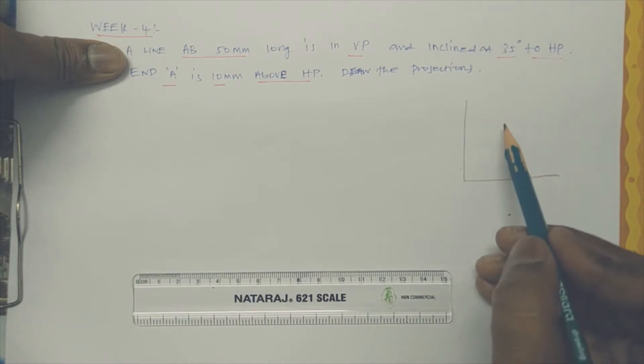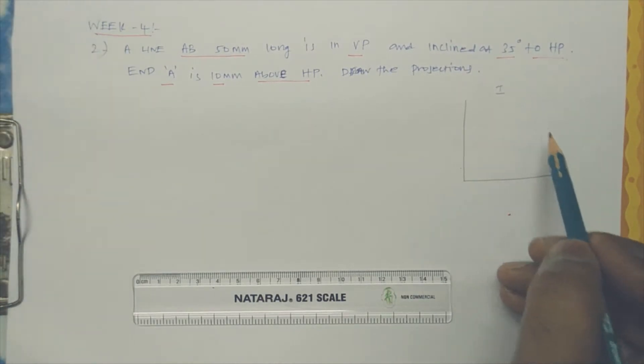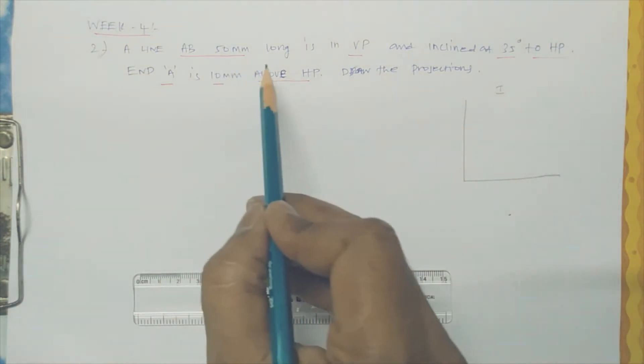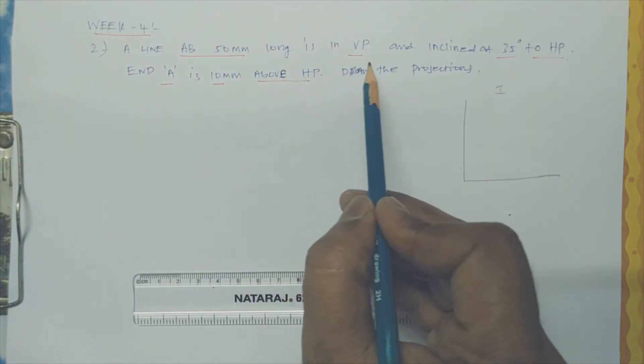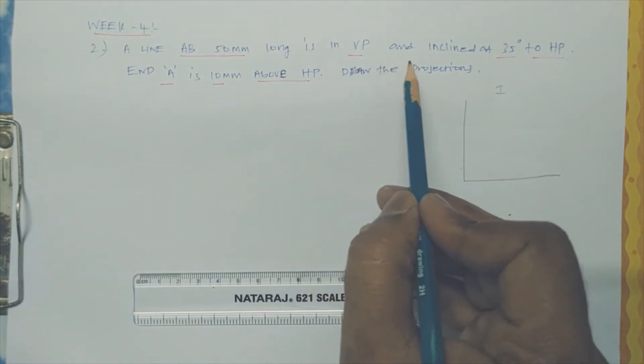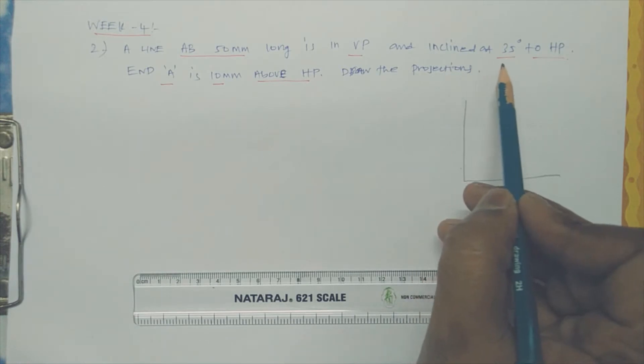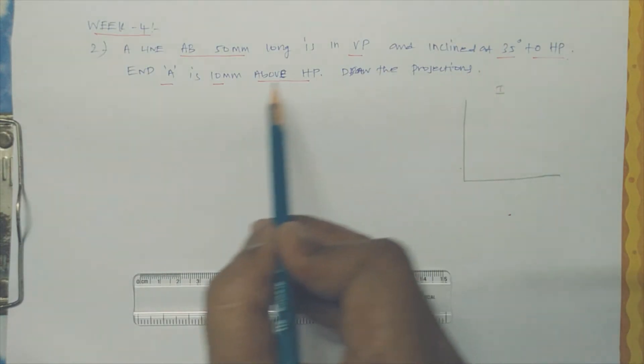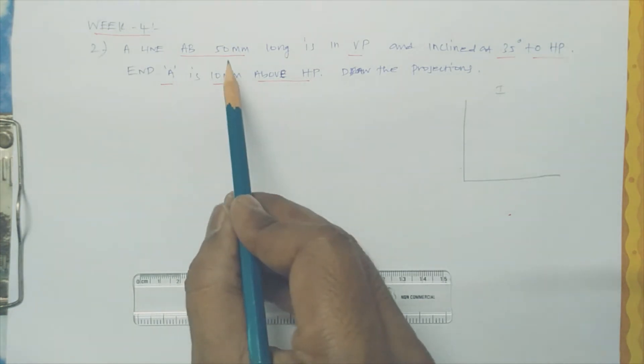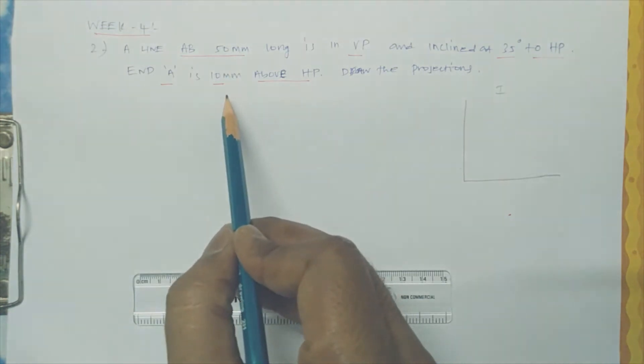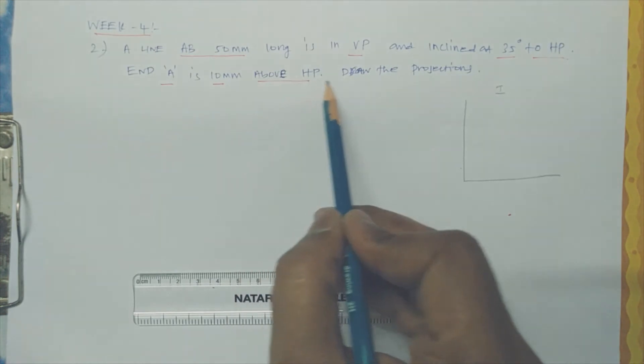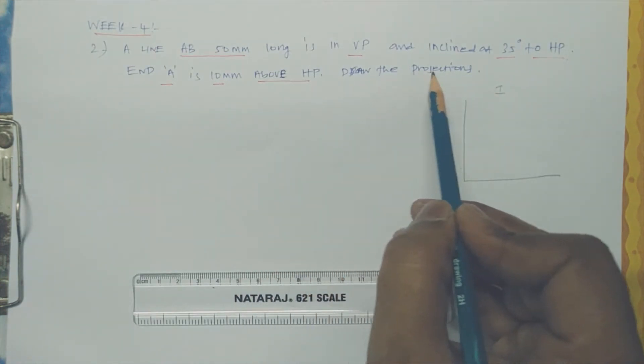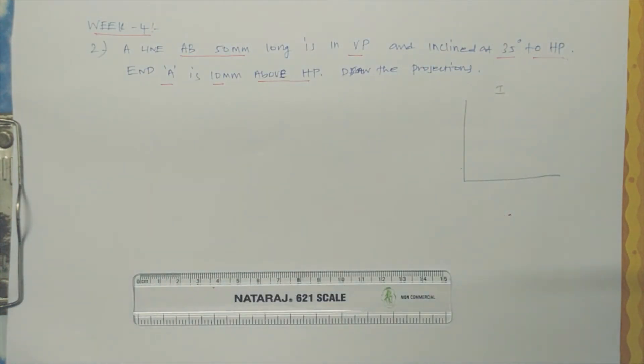Let us consider the first angle projection. After lines and solids, all are in the first angle projection. Here they are saying a line AB, 50mm long, is in VP and inclined at 35 degrees to HP. End A is 10mm above HP. Draw the projections. It's a very simple method.